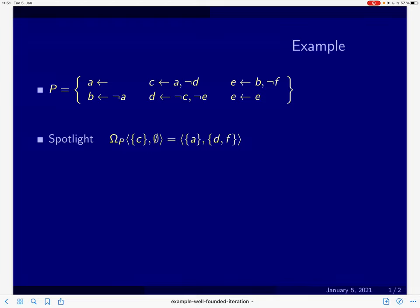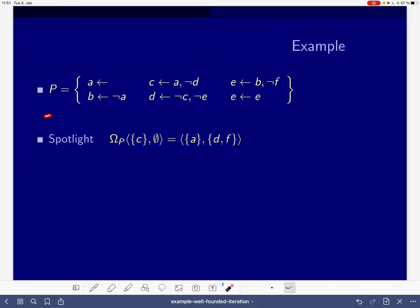Hello and welcome to another blueboard session. This is the first blueboard session in the section on the well-founded operator, and this is exactly the guy I would like to play with. We are looking again at our running example and its associated well-founded operator, and I want to apply it to the partial interpretation that makes C true and no atoms false.